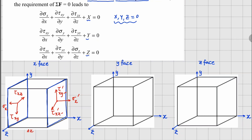Moving to the y-face: the positive y-face has all stress components acting in the positive direction, and the negative y-face has everything pointing in the negative direction. The normal stress is sigma_y prime and sigma_y. The shear stress on the y-plane in the x-direction is tau_yx prime and tau_yx, and on the y-plane in the z-direction it is tau_yz prime and tau_yz.